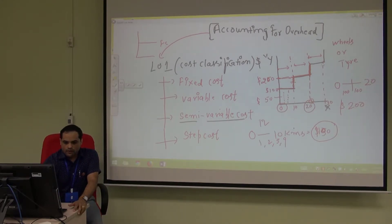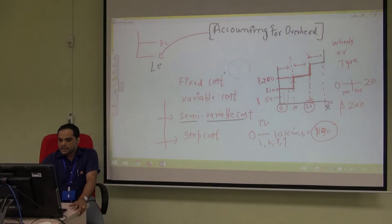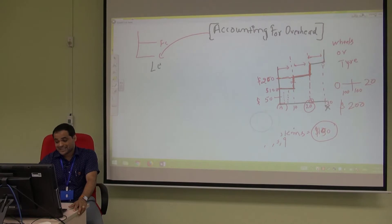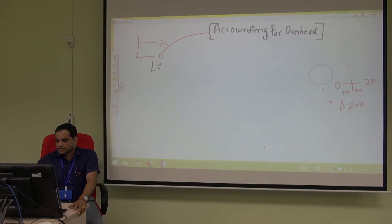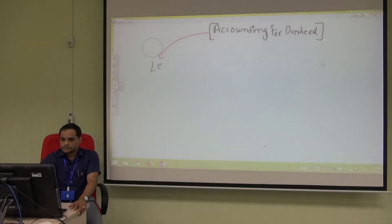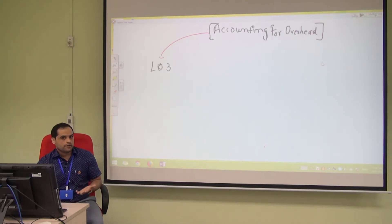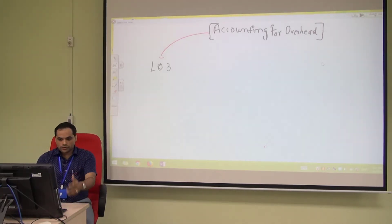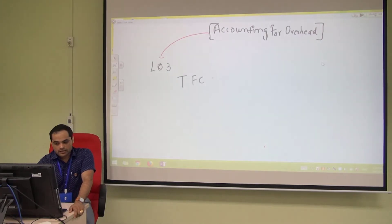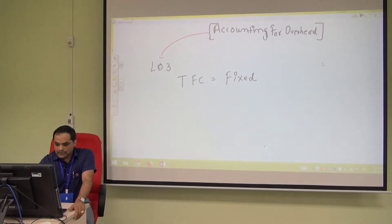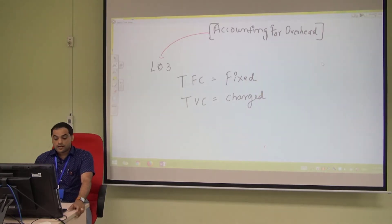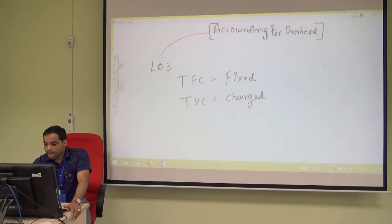That covers Learning Outcome 1 — the nature of costs: fixed, semi-variable, and step cost. We now move to Learning Outcome 3, skipping Learning Outcome 2 as it is not part of the syllabus. Learning Outcome 3 is about the behavior of costs. The nature of total fixed cost is that it remains constant and does not change.